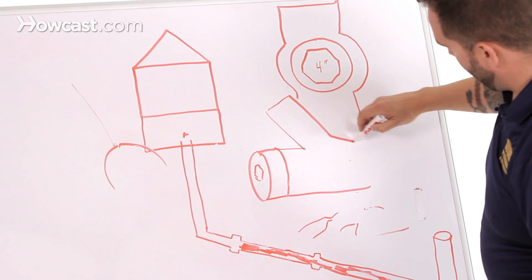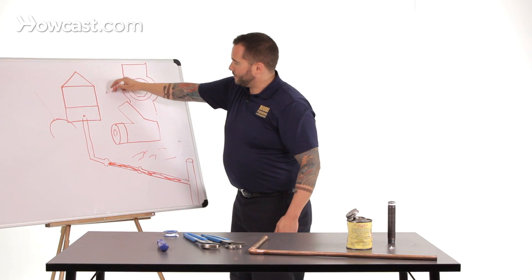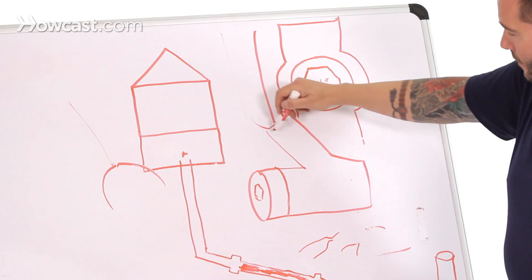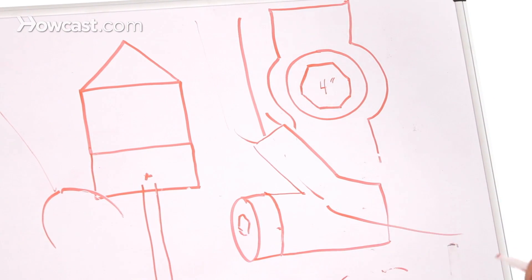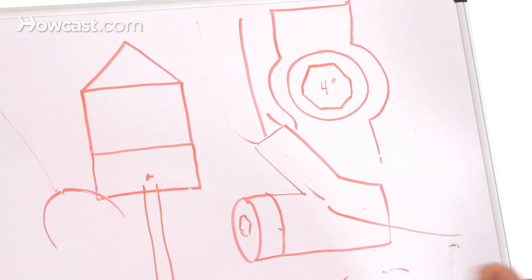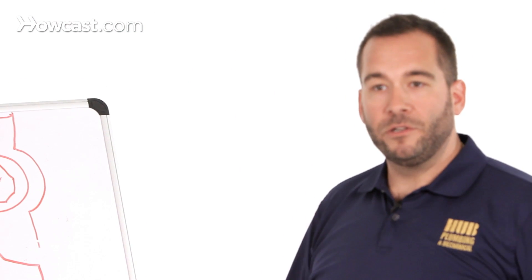So this would be the end of a run. This could be a vertical drain coming down from upstairs into that Y, and the waste would run out that way, and you have this end clean-out for specifically the purpose of being able to remove it and snake the line from the building out. And that's how you'd clear a drain.